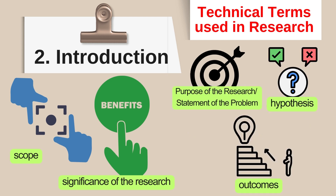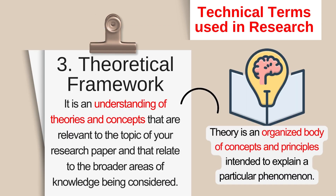Lastly, possible or desired outcomes are what the researchers expect to happen at the end of the research or study. It is usually written in numbered format. Another term is the theoretical framework. It is an understanding of theories and concepts that are relevant to the topic of your research paper and that relate to the broader ideas of knowledge being considered. This can support your research. A theory is an organized body of concepts and principles intended to explain a particular phenomenon.